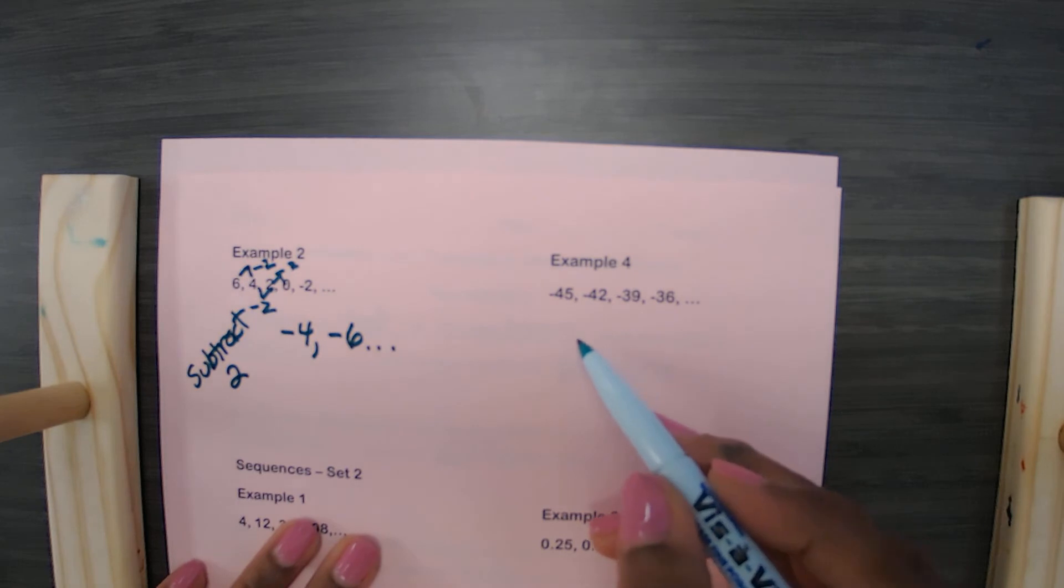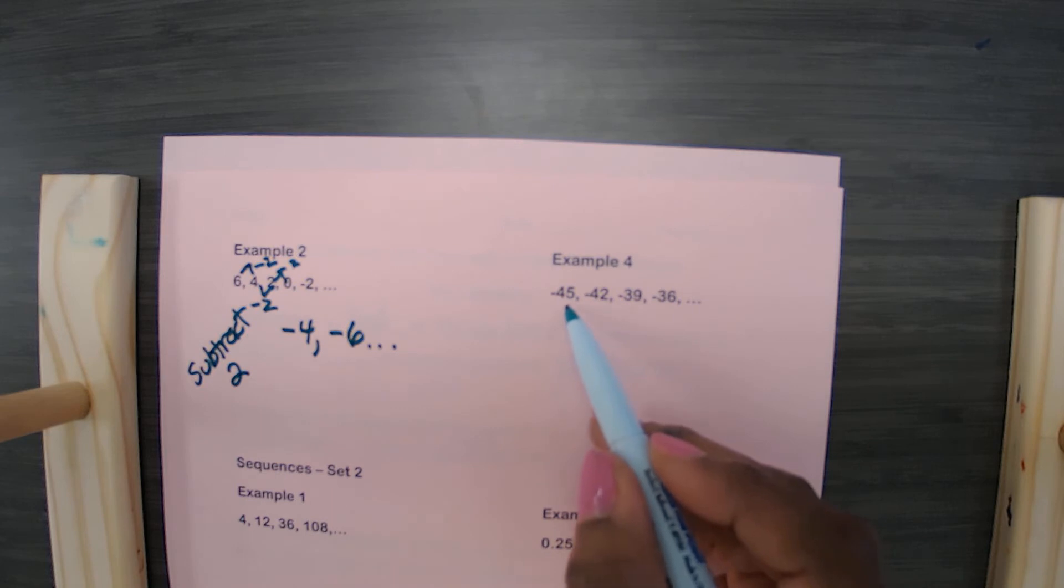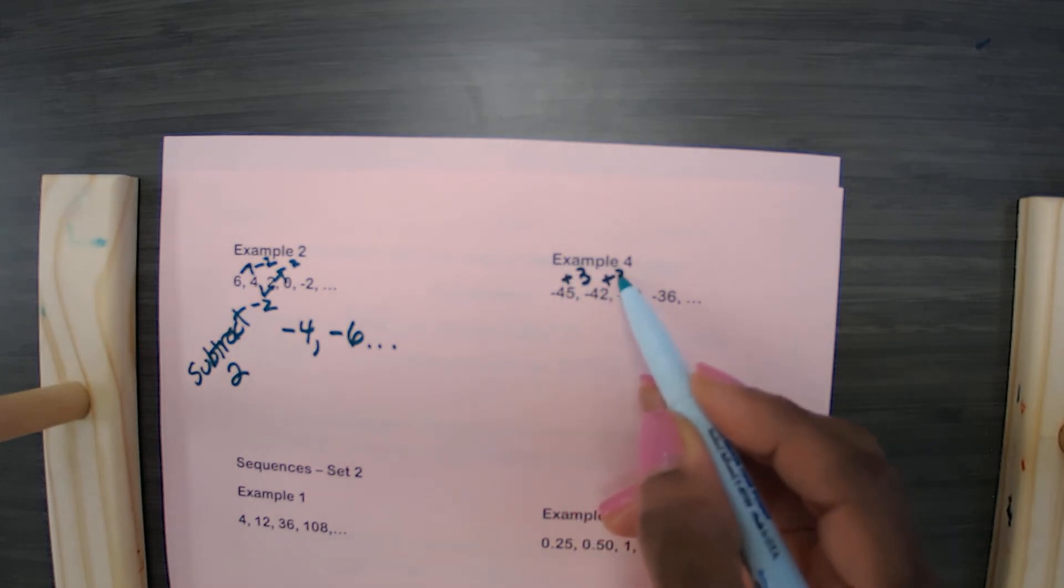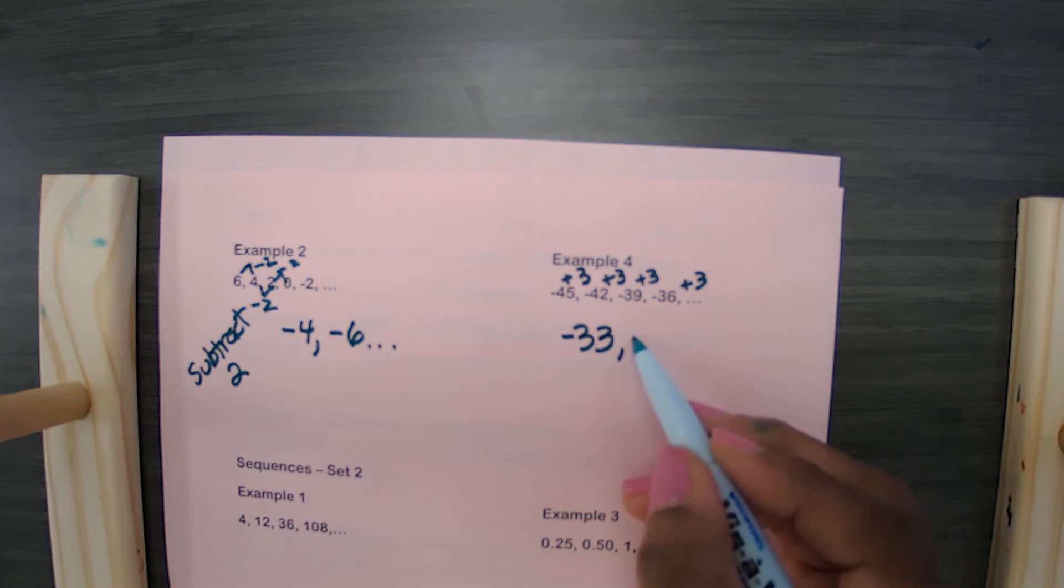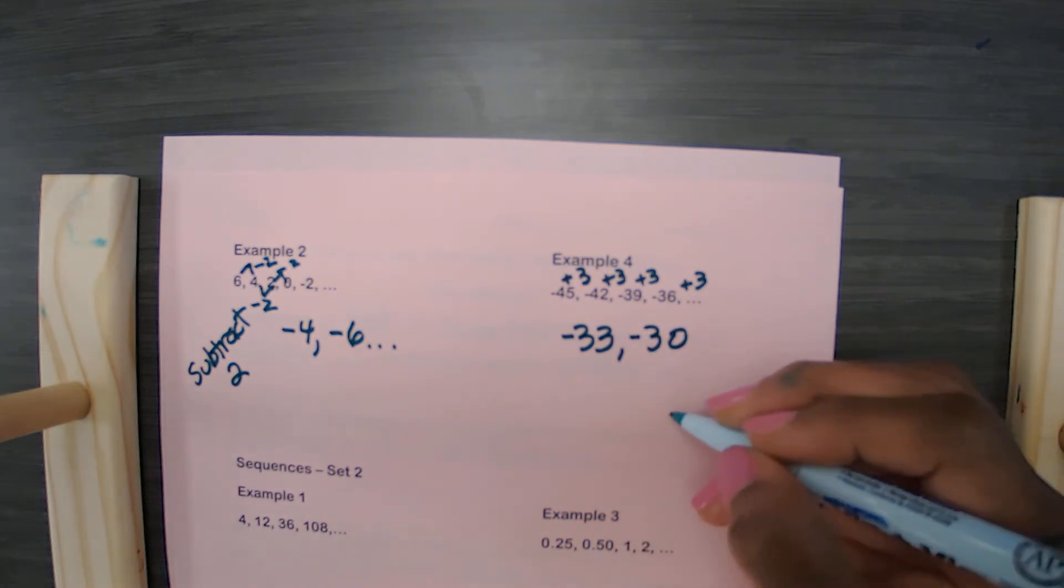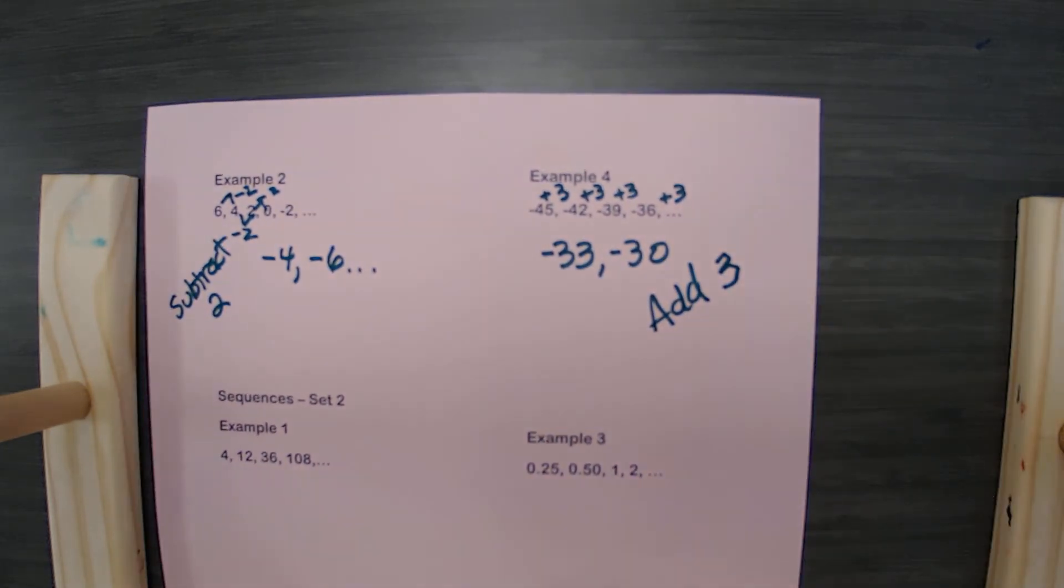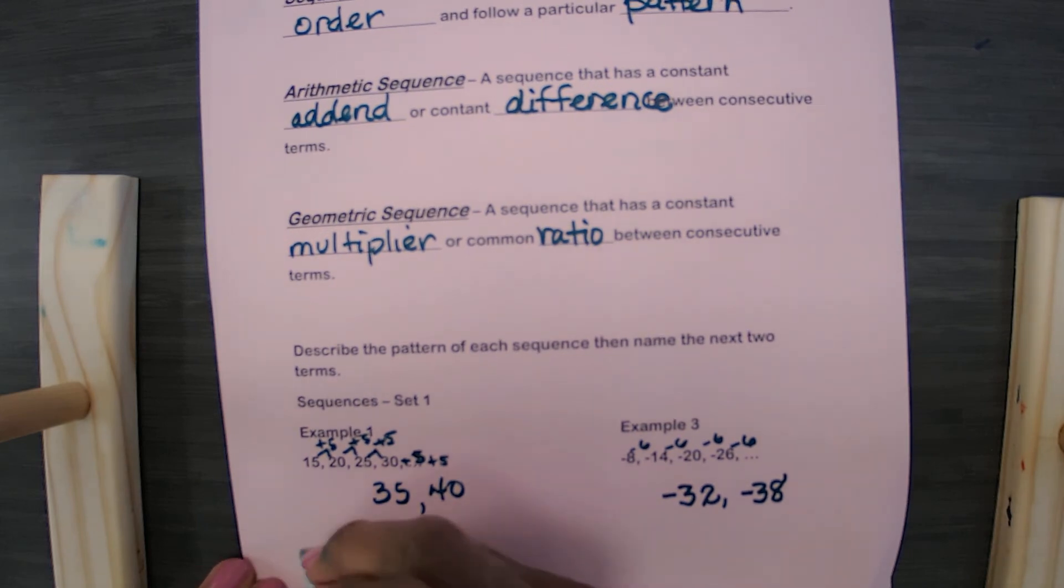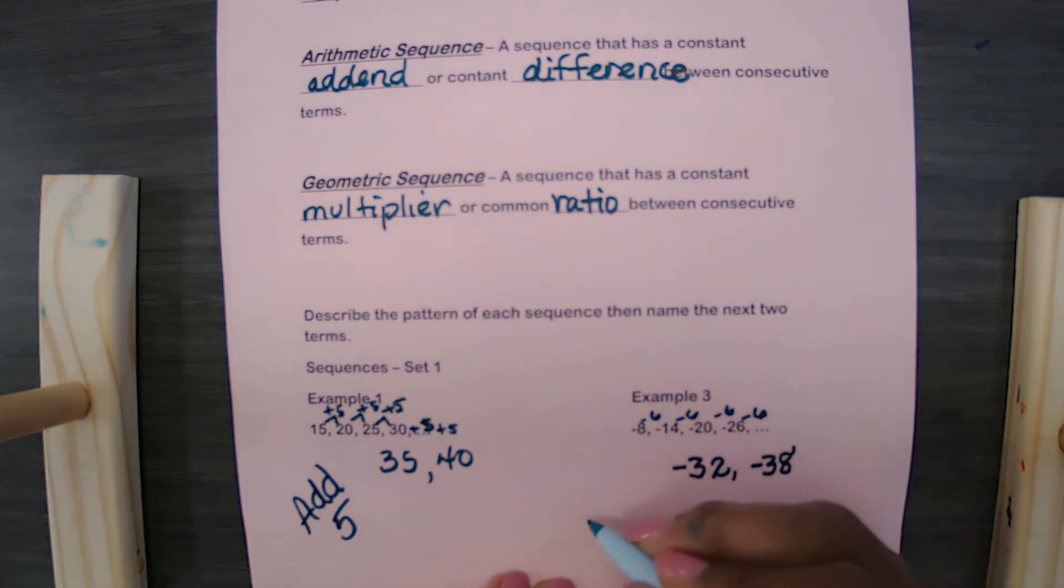This next example, we're coming further up and to the right on the number line. So looks like what we're doing is we're adding 3. So here we are adding 3 each time. So if I add 3 here, I'm at negative 33. I add 3 again, I'm at negative 30. So here we are adding 3 each time. And I did not write on the other ones. On this one, we were adding 5 each time. And on this one, we were subtracting 6 each time.